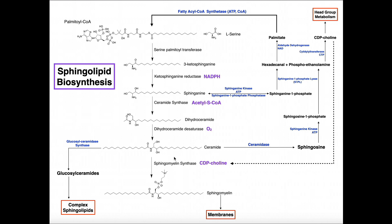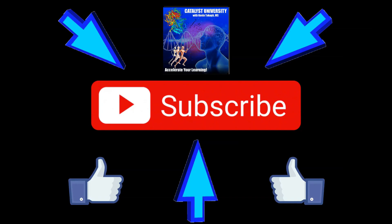The three goals of this biosynthetic pathway are: one, to make ceramide, which serves as a branch point; two, to take ceramide and make glucosylceramides and more complex sphingolipids; and three, to take ceramide and make sphingomyelin. Hopefully after this video, you have a better understanding of what sphingolipids are used for and the biosynthetic pathway from palmitoyl-CoA to sphingomyelin and ceramide. Please make sure to like this video and subscribe to my channel for future videos and notifications. Thank you.